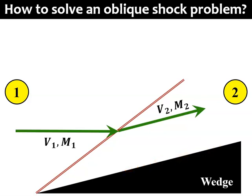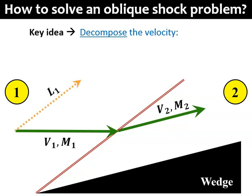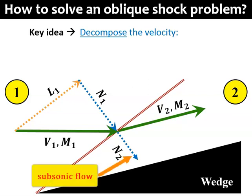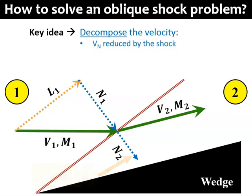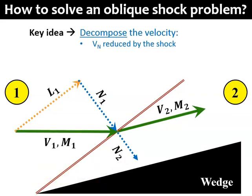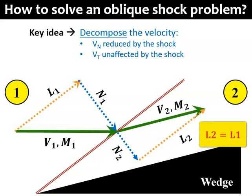The main idea to solve this problem is that the incoming flow can be decomposed into its vector components. The component vectors must be defined relative to the oblique shock. So we would have one component parallel to the shock, which is the tangential velocity L1, and another component perpendicular to the shock, which is the normal velocity N1. Now, here is the important part. Because N1 is normal to the shock, it will be compressed and slowed down into a subsonic flow when it crosses the shock. So the N2 vector is shorter than N1. On the other hand, L1 is parallel to the shock, so it is not going to be affected by the shock. That means we have L2 to be identical to L1, in terms of their magnitude and direction.